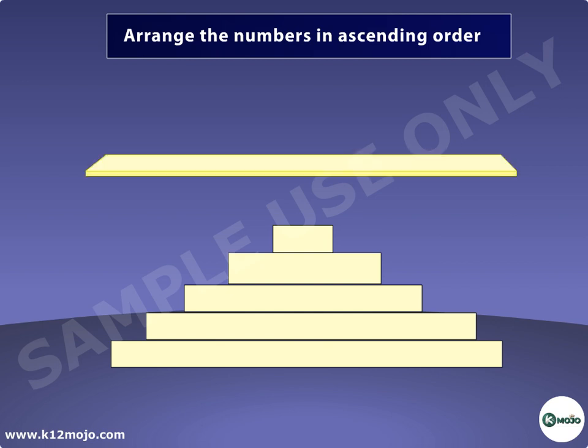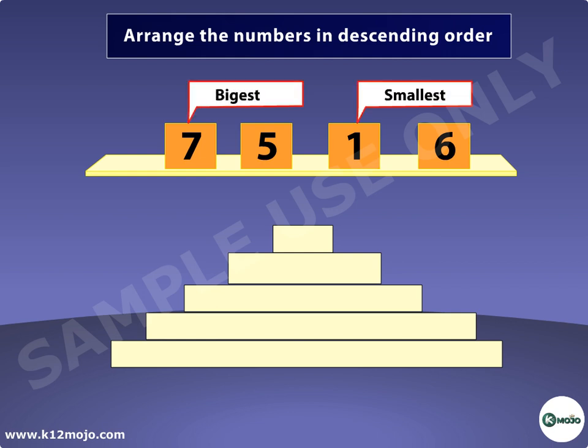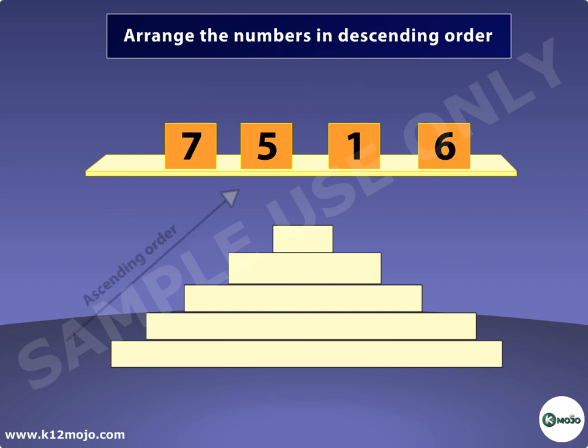Now arrange the numbers 7, 5, 1, and 6 in descending order. In this set the smallest number is 1 and the biggest number is 7. Between 5 and 6, five is the smaller number. The numbers in ascending order are 1, 5, 6, 7.